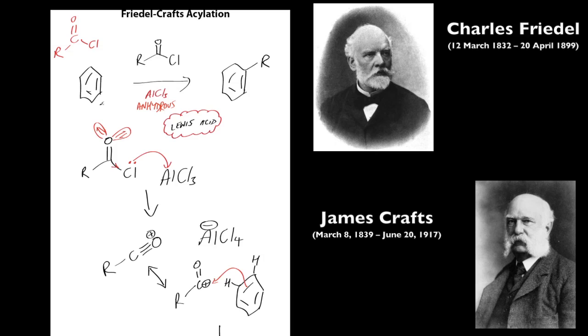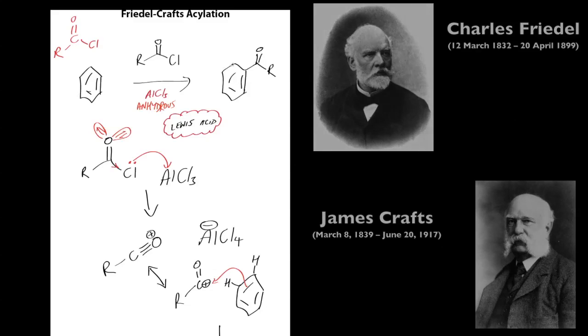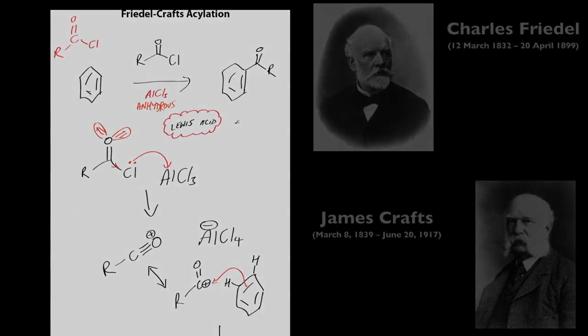So that is the Friedel-Crafts acylation reaction. Basically, if you take an aromatic, in this case I used benzene, but it could be any aromatic compound, that's quite electron rich. React that with an acyl chloride, and this is an acyl chloride group, in the presence of a Lewis acid, under anhydrous conditions, using a solvent that's not aromatic, otherwise the solvent will become acylated, if it's reactive enough. And that will give us this acyl benzene compound here. That's a really good way of making, putting a carbonyl group right next to a benzene. So that's Friedel-Crafts acylation.